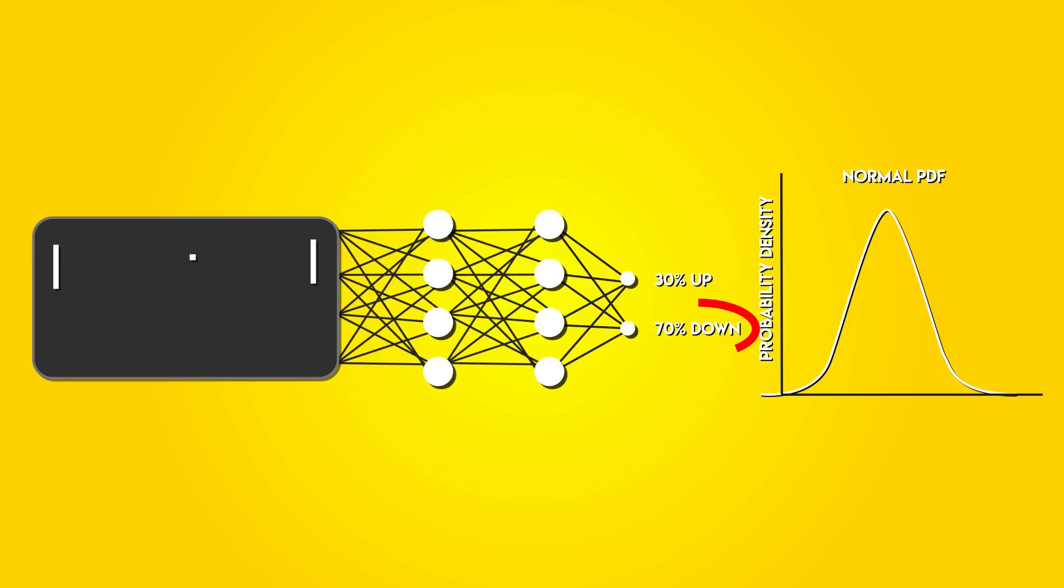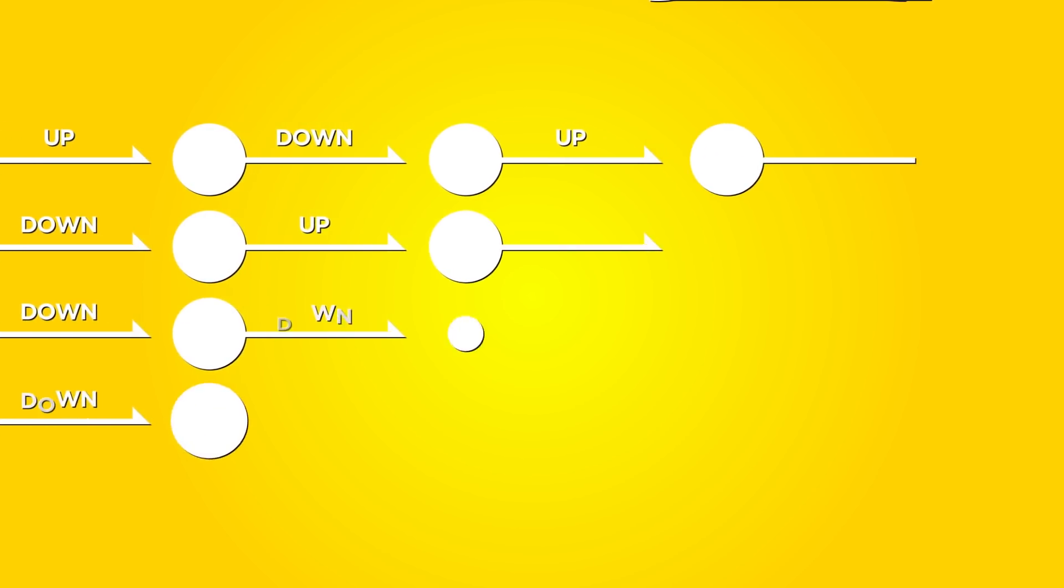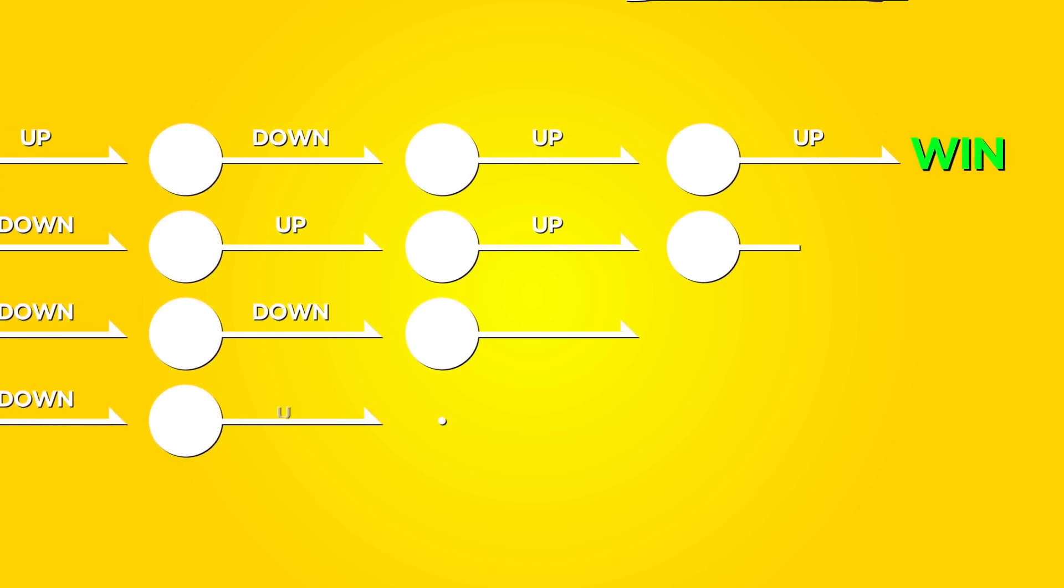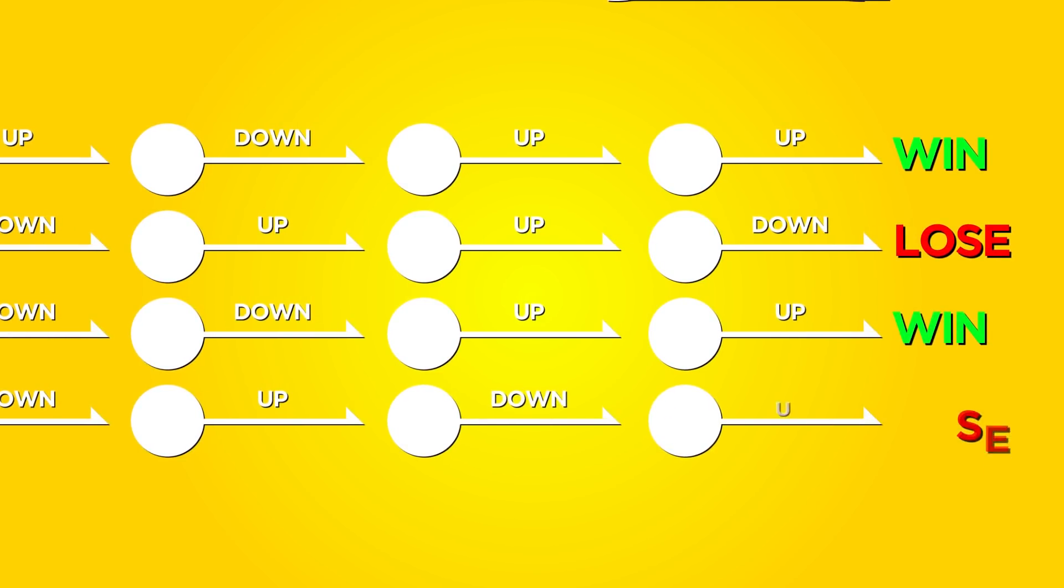So, if going down ended up losing the game eventually, we can find a gradient that discourages the network to take the down action for the input in the future. And that's how policy gradients work. We have a policy that samples actions and then actions that happen to eventually lead to game wins get encouraged in the future. Actions that lead us to losing the game get discouraged.